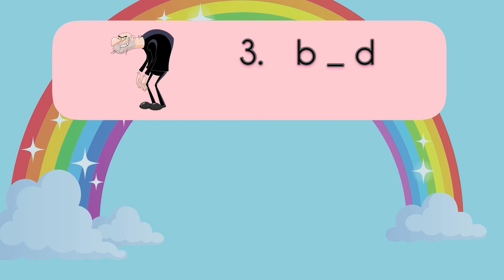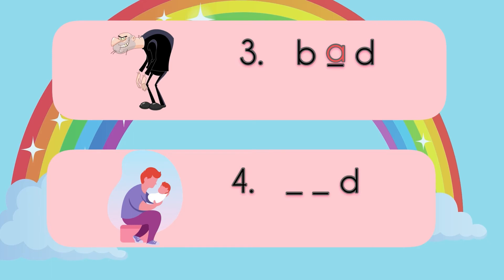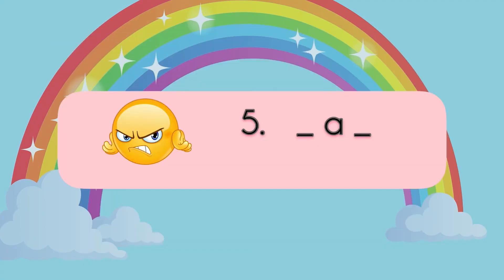Number three — the picture is Bad. What is the middle sound of Bad? Bad. Number four — the picture is Bad. What is the first and middle sound of Bad? Yes, bad. Very good! And last, the picture is Mad. What is the first and last sound? Yes, good job!